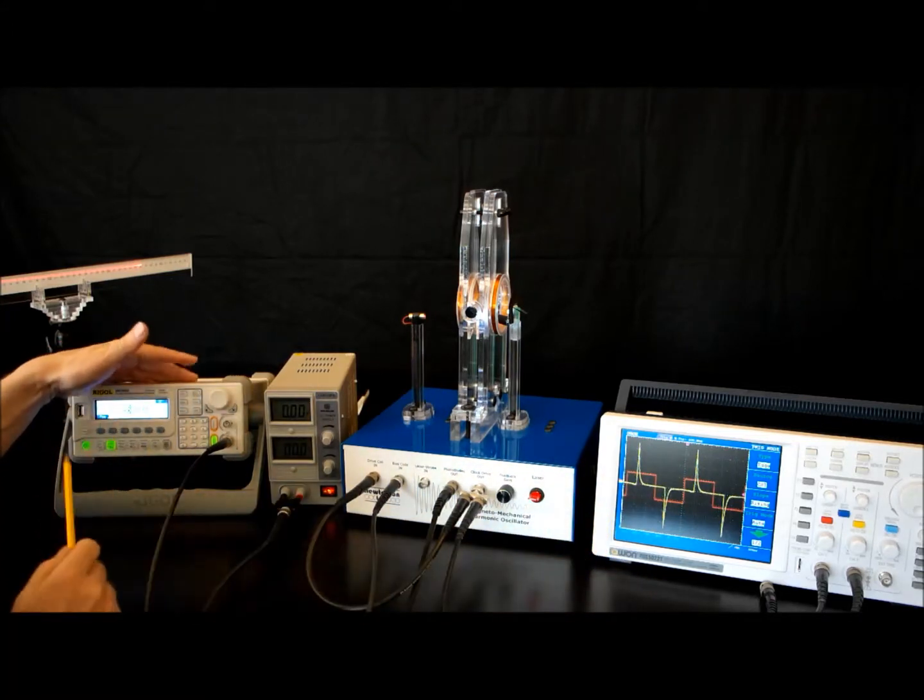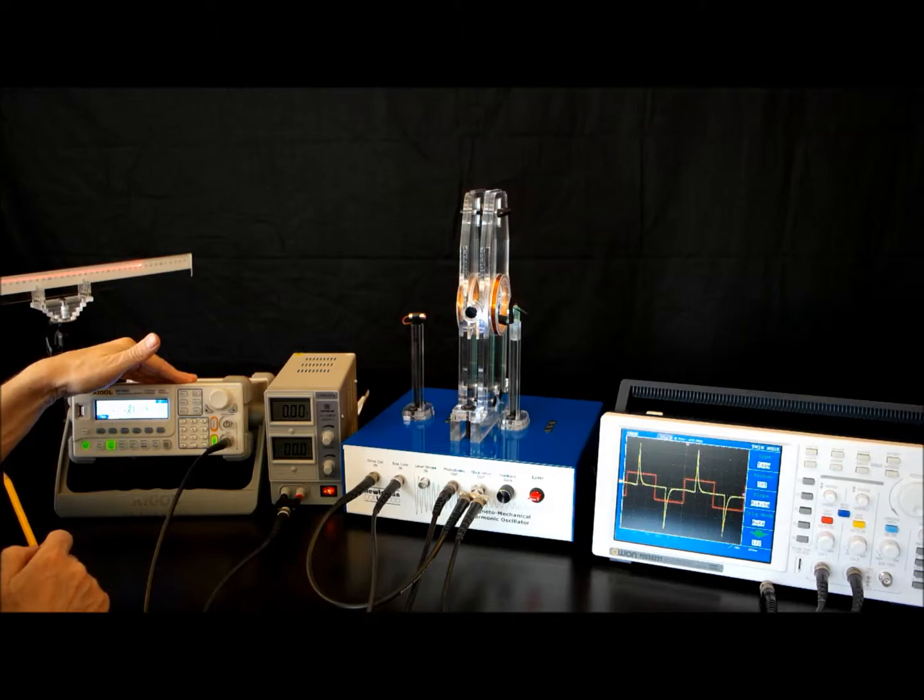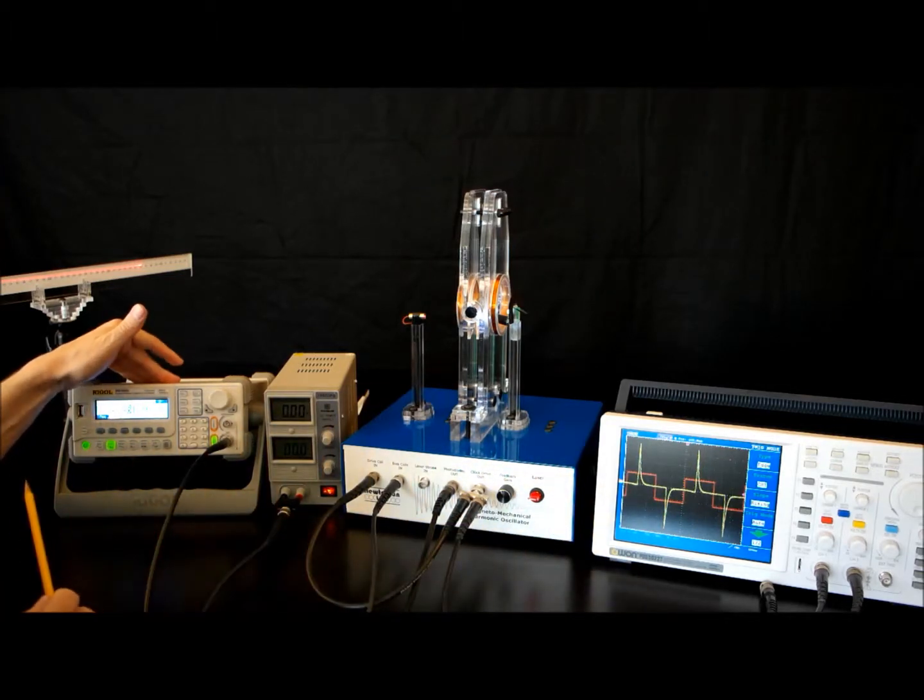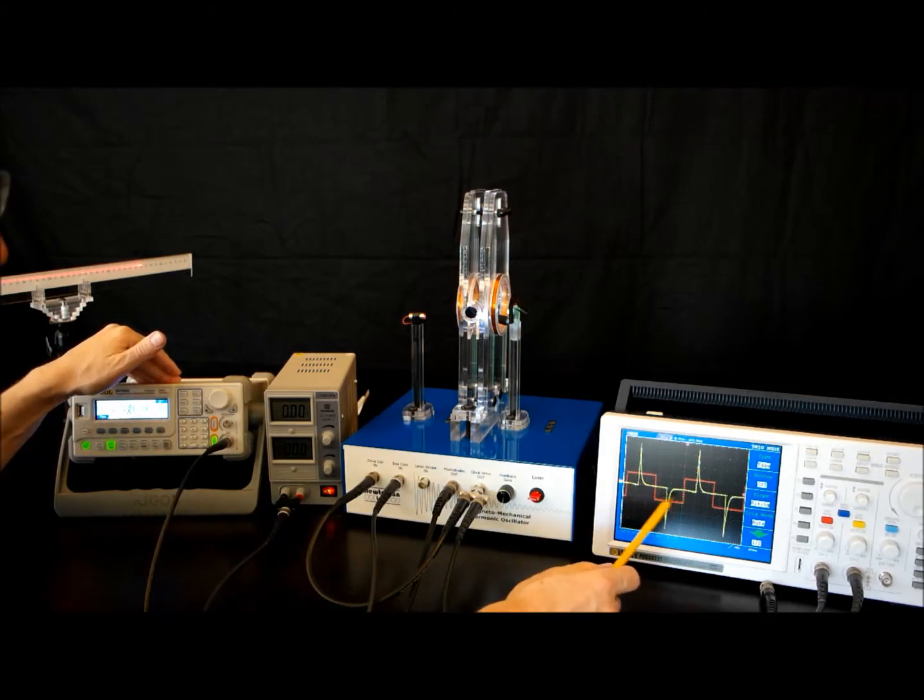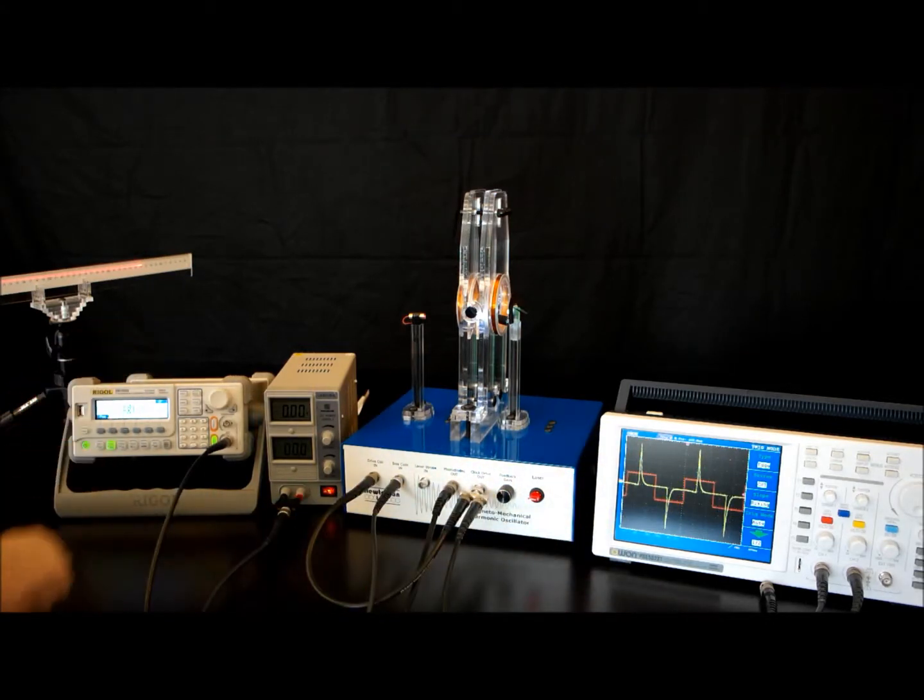The red trace comes from the signal generator, just a square wave at the resonant frequency. Because the signal generator is putting out a frequency which is very close to the resonant frequency, these curves do not drift relative to one another.